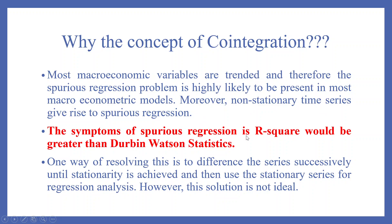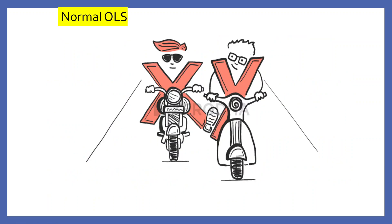The symptom of spurious regression is that R-squared would be greater than the Durbin-Watson statistic. One way of resolving this is to difference the series successively until stationarity is achieved and then use the stationary series for regression analysis. However, this situation is not ideal. Let us try to understand this stationarity concept with a layman example.